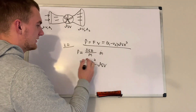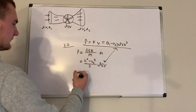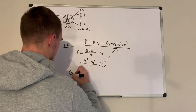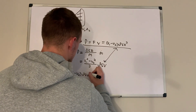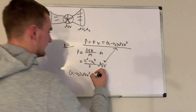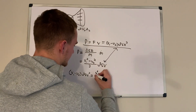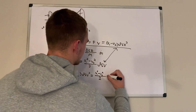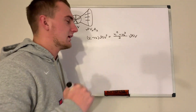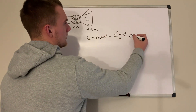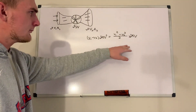Now we set these two power expressions equal to each other: (v1 − v2)·rho·S·v² = (v1² − v2²)/2 · rho·S·v. We can cancel rho·S from both sides, then solve for v. The numerator becomes (v1 − v2)·(v1 + v2) and the denominator is 2·(v1 − v2), so the (v1 − v2) terms cancel.